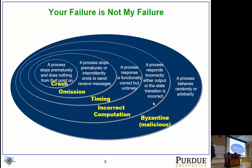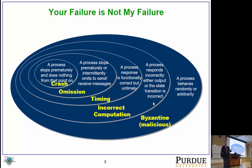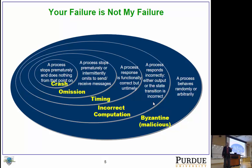Then you have omission failures, where you send a query and sometimes the service omits to respond. There are also timing failures, where the system responds with the correct answer but takes much longer than the specification allows. Finally, you have Byzantine or malicious failures — the most unconstrained kind — where a component can behave arbitrarily, sometimes giving the right answer, sometimes the wrong answer, and multiple components can collude to give you wrong answers.